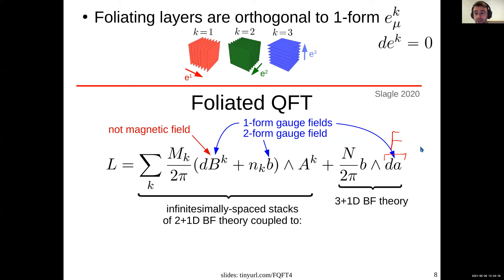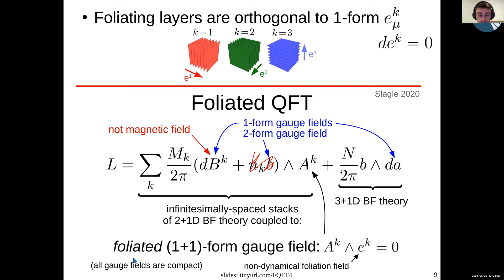This first term, if we erase this part of it, we see it's again a BF theory kind of form. But this big B is a one-form, while big A is a two-form, but it's not just any two-form. It's going to be special. It'll be a foliated 1+1 form gauge field. That is, it's a two-form gauge field, but it will satisfy this constraint. So this is where this foliation field e will pop up. The wedge product of A wedge foliation field must be equal to 0. And what this does is it makes this first term act like infinitesimally spaced stacks of 2+1D BF theory. So by itself, without this coupling, this first term actually describes a stacking of toric code layers.